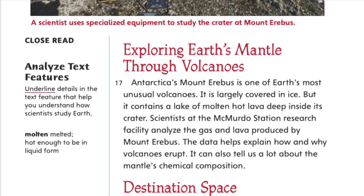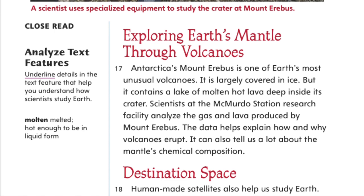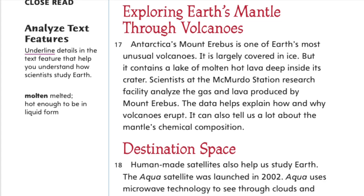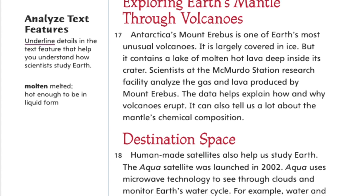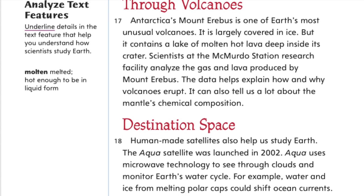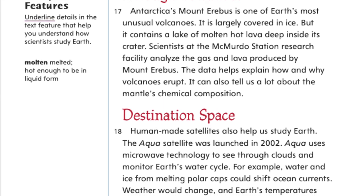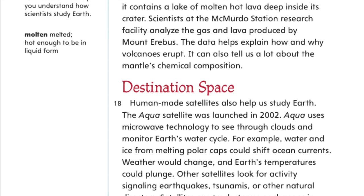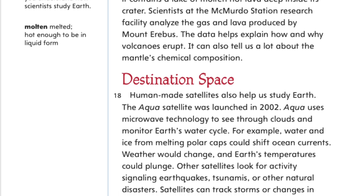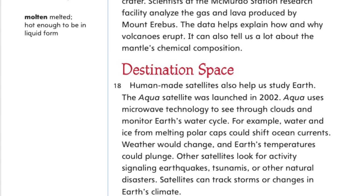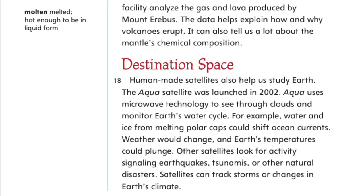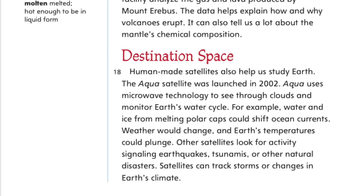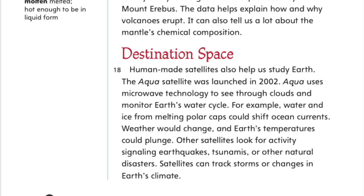Destination Space. Human-made satellites also help us study Earth. The Aqua satellite was launched in 2002. Aqua uses microwave technology to see through clouds and monitor Earth's water cycle. For example, water and ice from melting polar caps could shift ocean currents, weather would change, and Earth's temperatures could plunge. Other satellites look for activity signaling earthquakes, tsunamis, or other natural disasters. Satellites can track storms or changes in Earth's climate.